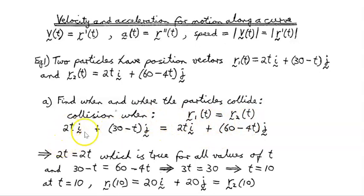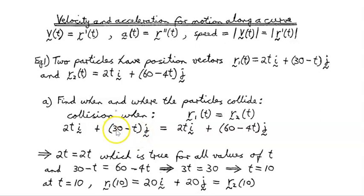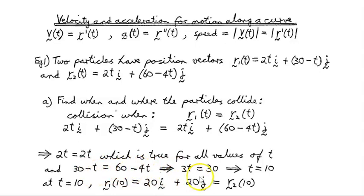Setting r1 equal to r2, the i-components give 2t = 2t, which is true for all values of t, so we look at the j direction. The j-component of the first particle is 30 − t, which must equal 60 − 4t. Solving: 30 − t = 60 − 4t gives 3t = 30, so t = 10.